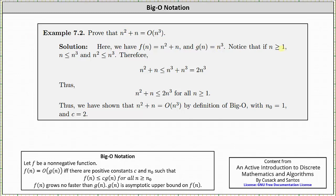Here we have f(n) equals n² + n and g(n) is equal to n³. Notice for n greater than or equal to 1, n is less than or equal to n³ and n² is less than or equal to n³. Notice when n is equal to 1, the left and right sides are equal, and when n is greater than 1, the left side is always less than the right side.